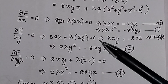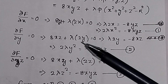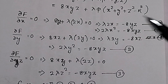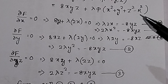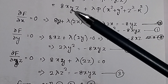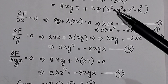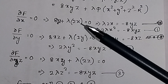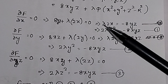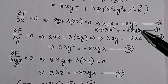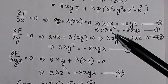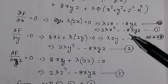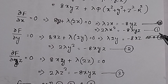As discussed in the previous video, to find the constraint maximization you take the partial derivative: ∂F/∂x = 0. Taking the partial derivative with respect to x gives 8yz + λ(2x) = 0. Rearranging: λ(2x) = −8yz. Multiplying both sides by x gives 2λx² = −8xyz. Suppose this is equation number 1.